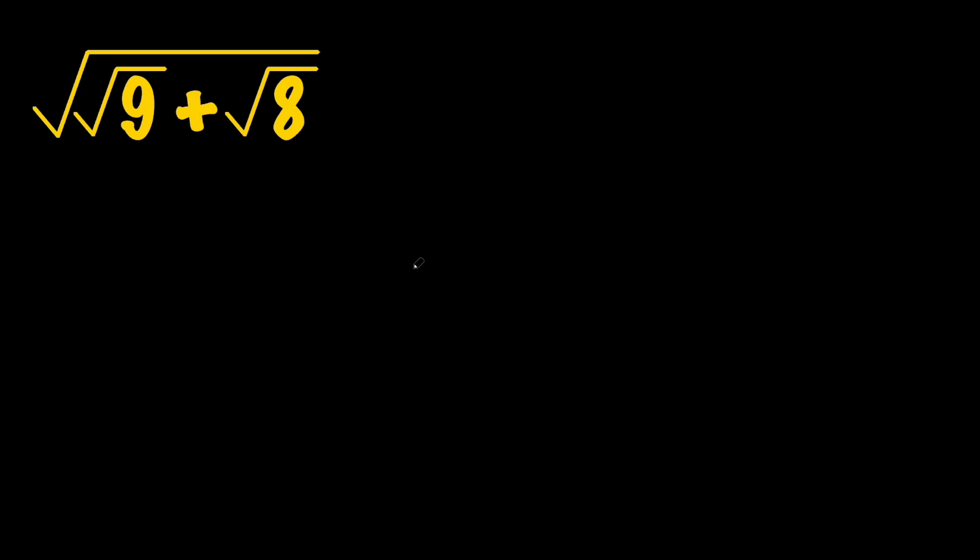Hello there, welcome to my channel. Today we're going to be simplifying a radical expression. We are given the square root of √9 + √8, and we're supposed to simplify this as much as possible.